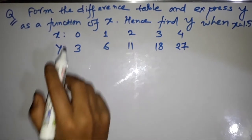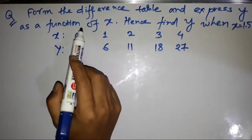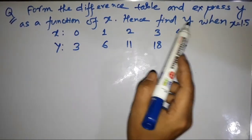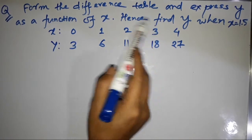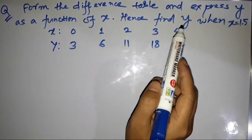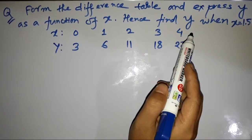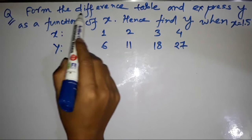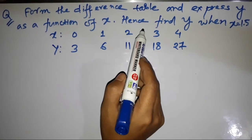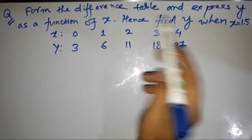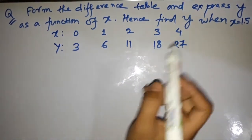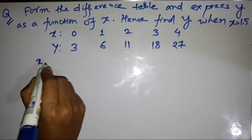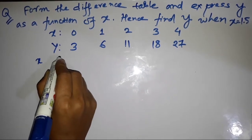Hello guys, today we discuss the math about Newton forward interpolation. First we have to form the difference table. To form the difference table, first we write a column on X and then a column on Y.